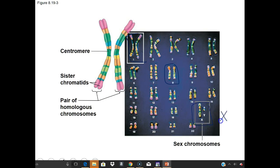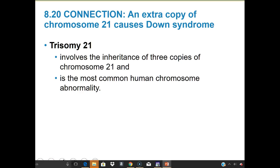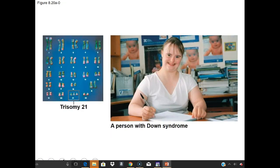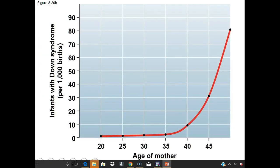A karyotype can reveal sex — two X chromosomes indicates female, while an X and a Y indicates male. Nondisjunction causes trisomy 21 — three copies of chromosome 21 — which is the most common human chromosomal abnormality, better known as Down syndrome. It causes certain facial features, short stature, heart defects, respiratory issues, and increased susceptibility to infections. The incidence increases with the age of the mother, and three copies at position 21 in the karyotype would identify it.